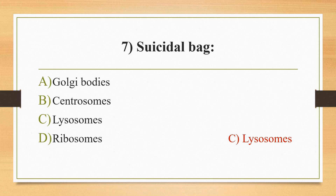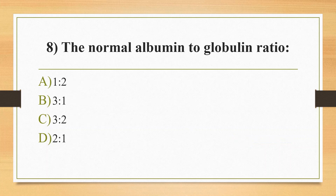The next question, eighth question: the normal albumin to globulin ratio — option A 1:2, option B 3:1, option C 3:2, option D 2:1. The answer is option D, 2:1.